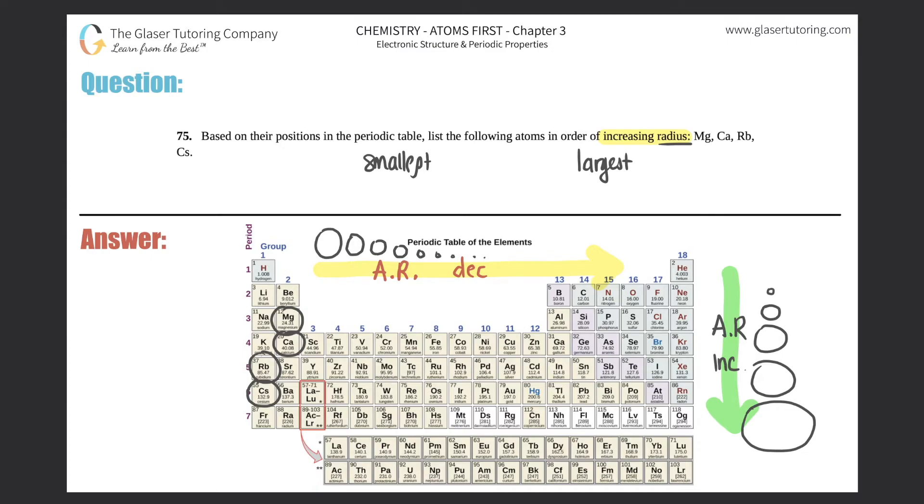It looks like this is definitely decreasing and this is definitely decreasing, so the general trend is they're decreasing. Which one would be the smallest? We go by the group trend - as you go down the periodic table, you get larger.